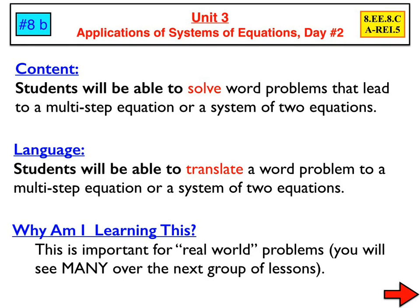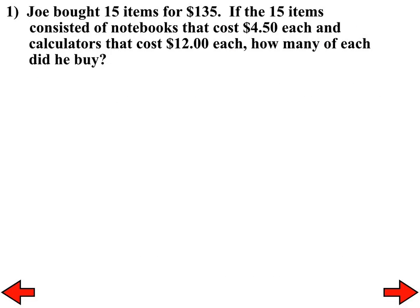We'll continue on with word problems where we have to set up a system of equations to solve. Let's start with number one. Joe bought 15 items for $135. If the 15 items consisted of notebooks that cost $4.50 and calculators that cost $12 each, how many of each did he buy?